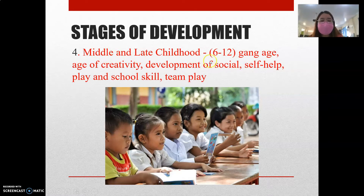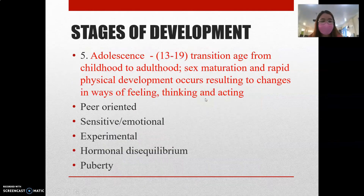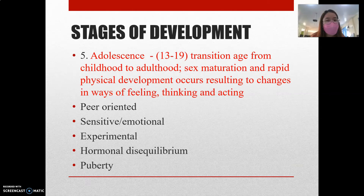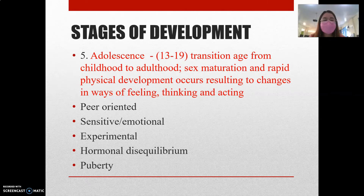Again, the fourth stage — middle and late childhood — covers ages 6 to 12. The fifth stage of development is adolescence, from 13 to 19 years old. This is the transition age from childhood to adulthood. Some people find it very difficult because there will be many adjustments required.